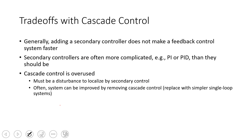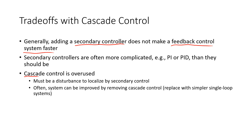Here are some trade-offs or misconceptions — problems with cascade controllers. Generally, adding this secondary controller does not make the feedback control system faster. It's just going to reject frequent disturbances that might be affecting the process. Also, the secondary controllers are often more complicated. Once you start adding cascade layers, this whole feedback control often becomes much more difficult to maintain and tune — that's just an added layer of complexity. Cascade control tends to be overused. We tend to build in complexity as different events happen in control systems, and it's easier to add things than to take them out. Sometimes a system can actually be improved by just removing these layers of cascade control with simpler single-loop systems.